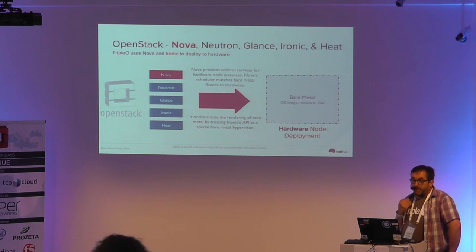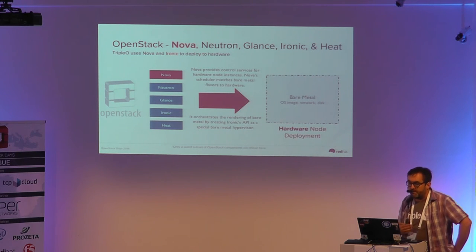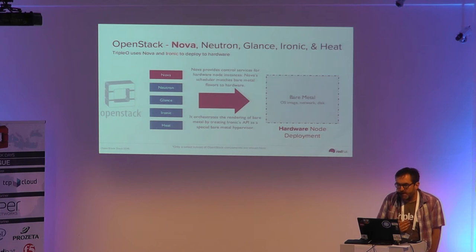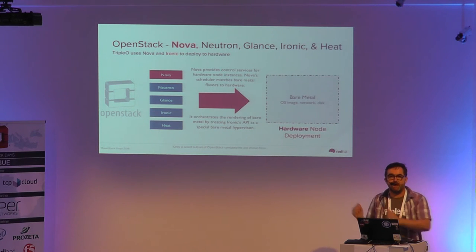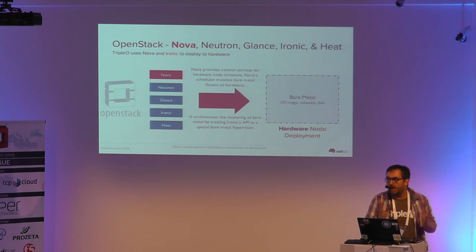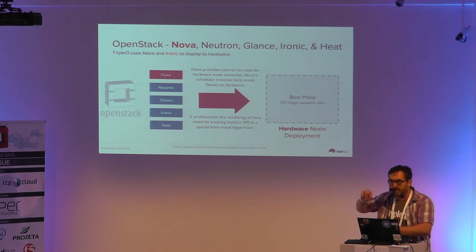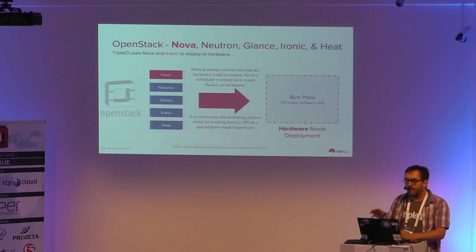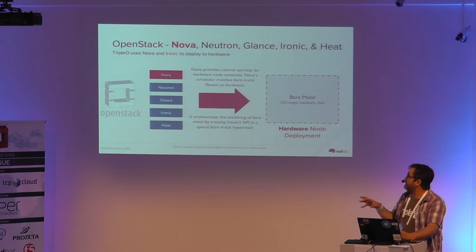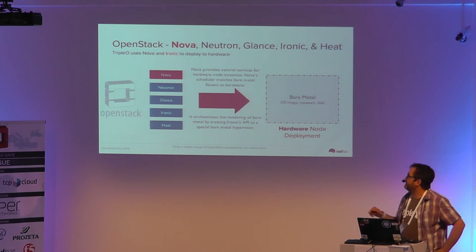In this case, Nova is providing the control service for deployment onto physical hardware. The Nova scheduler still does matching of flavours — basically a recipe specifying how much RAM and how many cores a machine should have. It still matches those flavours and makes a scheduling decision about where a node should be deployed, but what's actually being deployed is a physical node. The physical machine is being selected, not provisioned from scratch.